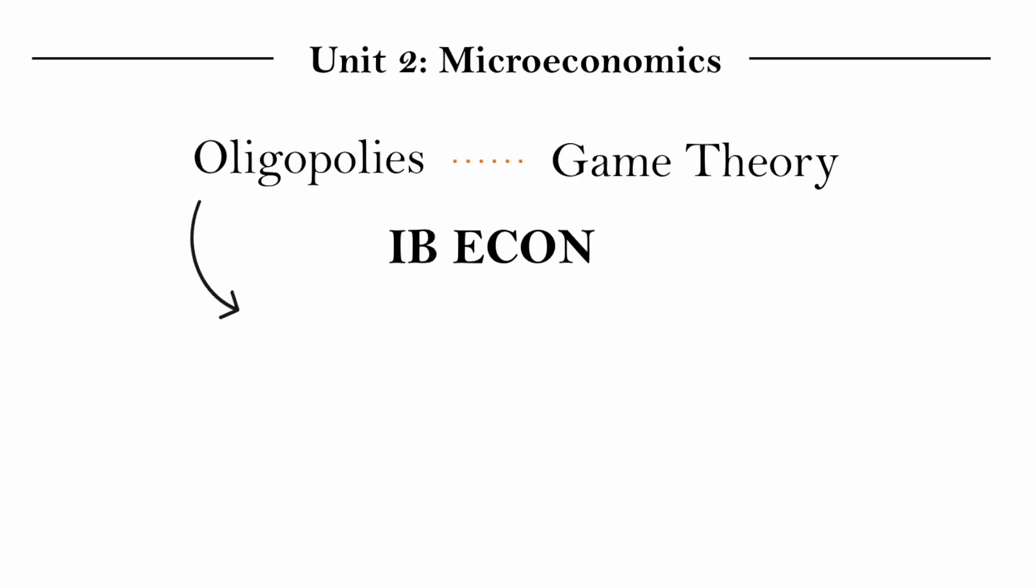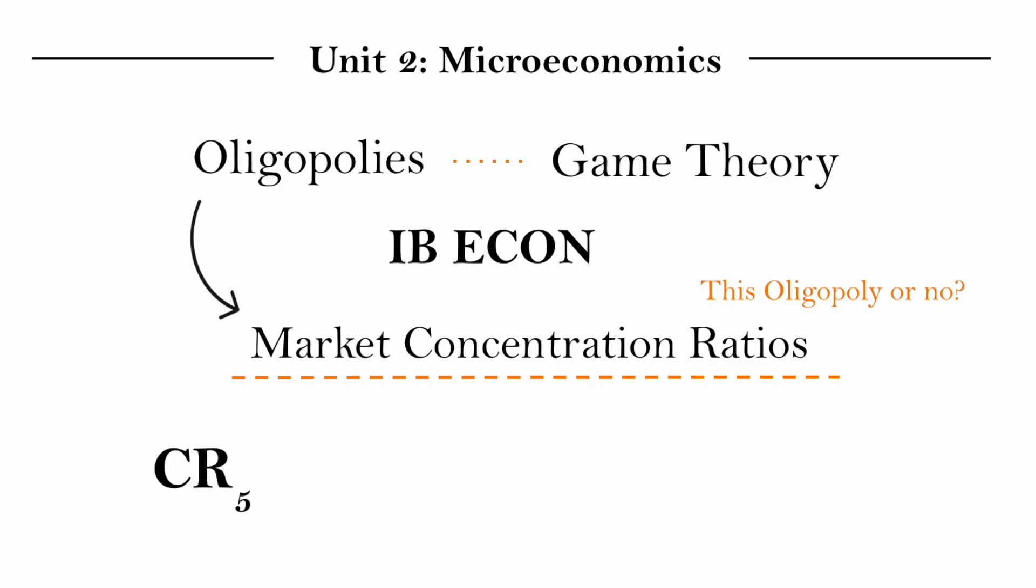And with that I'll introduce the last thing you're sort of have to know based on the syllabus, which is market concentration ratios, which is like a mathematic tool for determining whether a market is an oligopoly or not. Here if we calculate let's say CR5, so the concentration ratio for five, what it means is this is the sum of the market share of the five largest firms in the market.